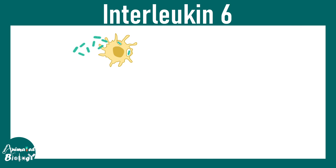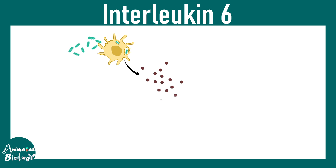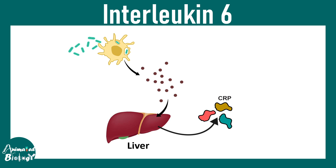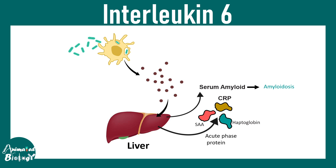When interleukin-6 is secreted, it is capable of inducing the liver to produce acute phase proteins such as C-reactive protein, SSA, and haptoglobin. Also from the liver, serum amyloid is secreted, which can basically cause amyloidosis. There could also be fibrinogen secreted by the liver.